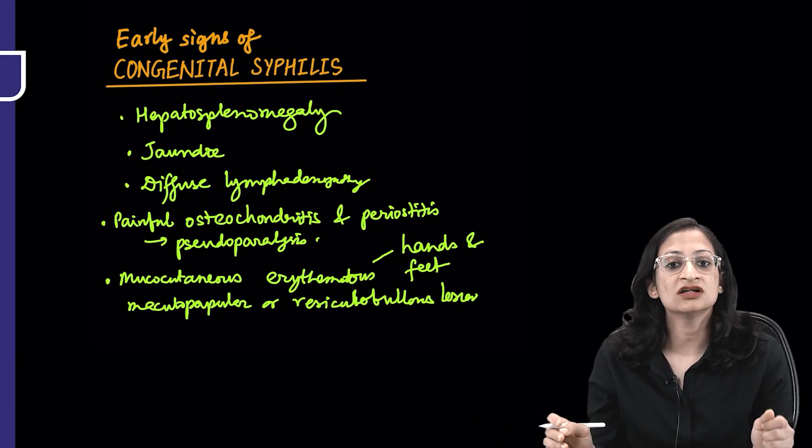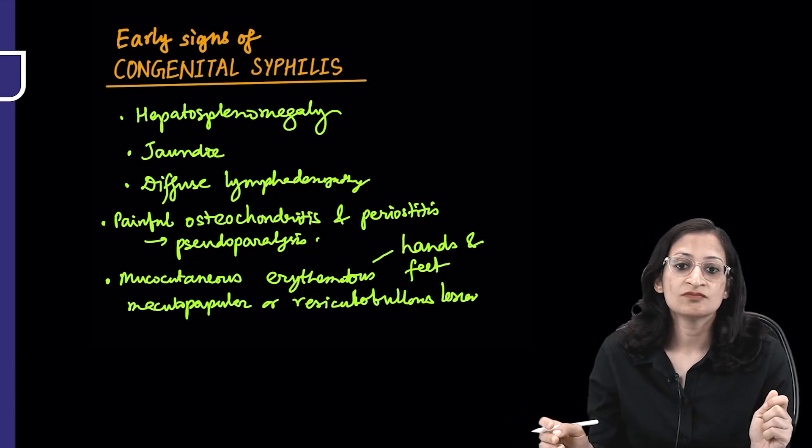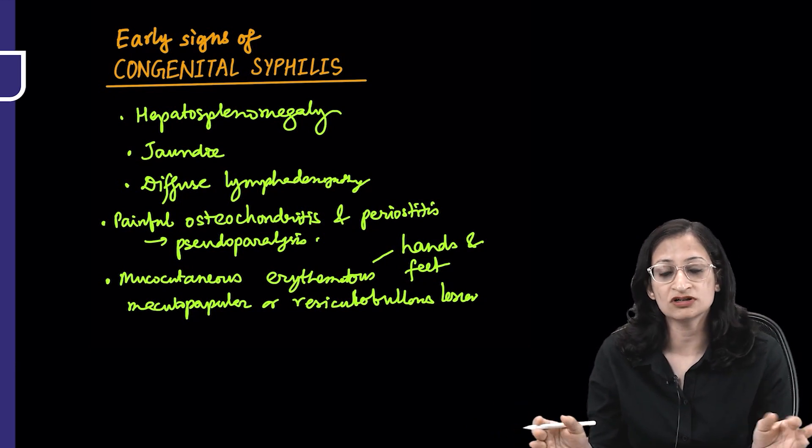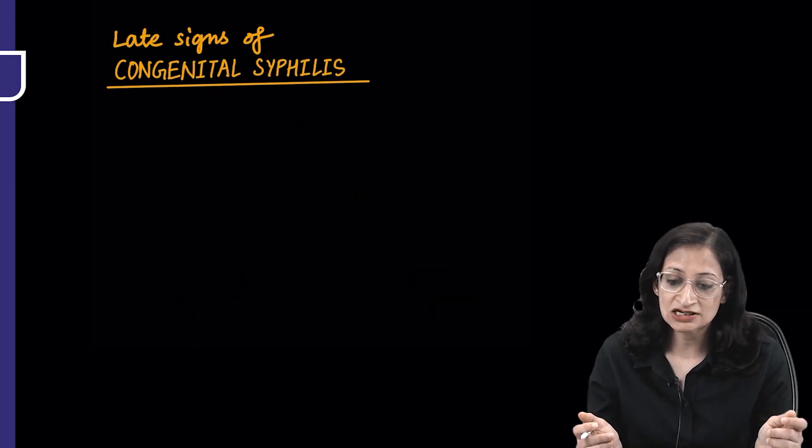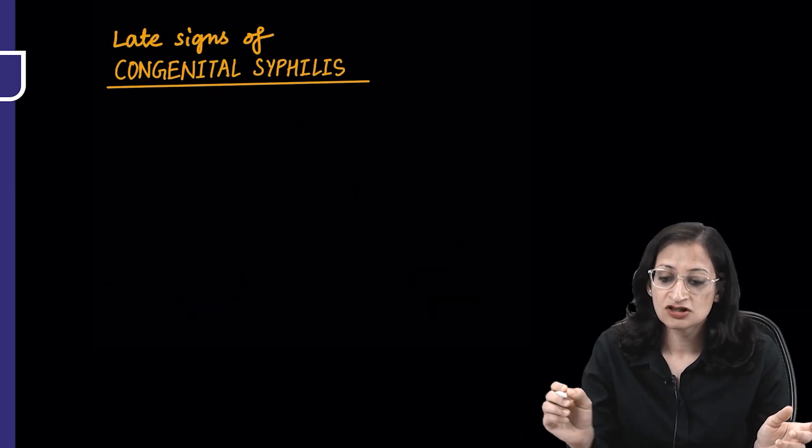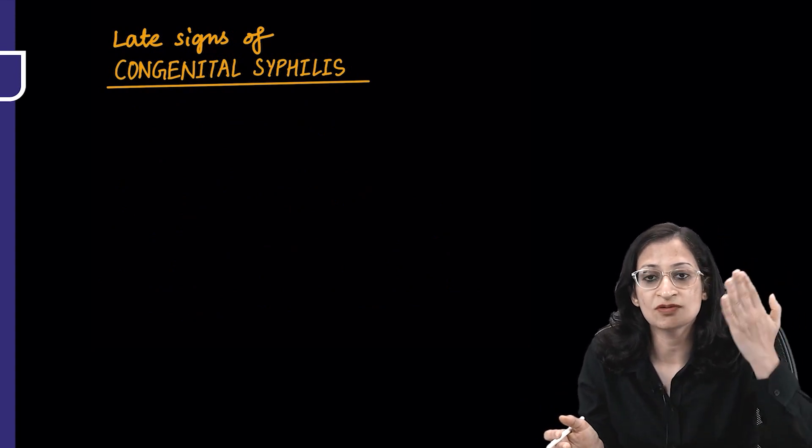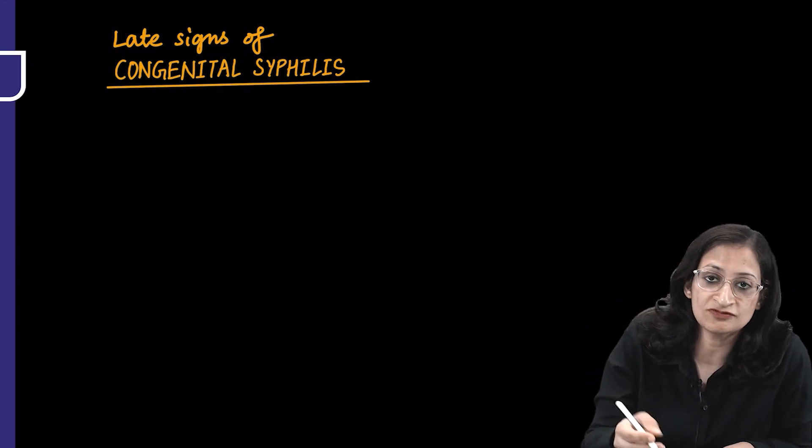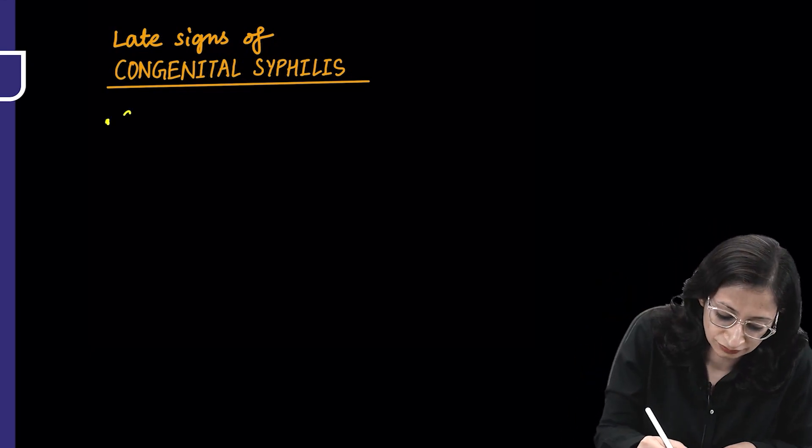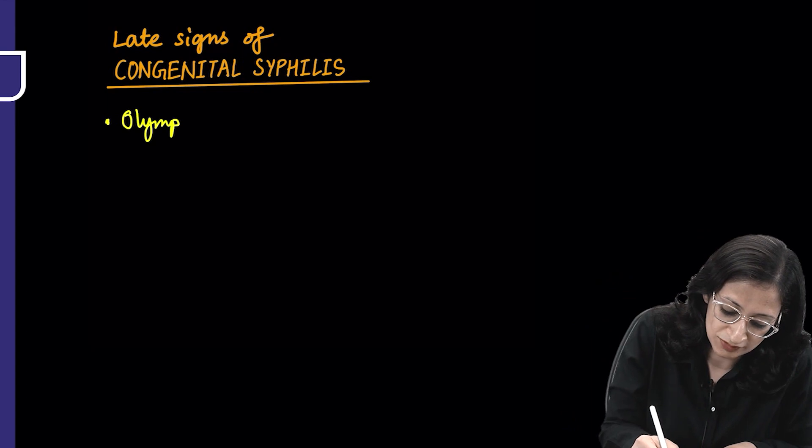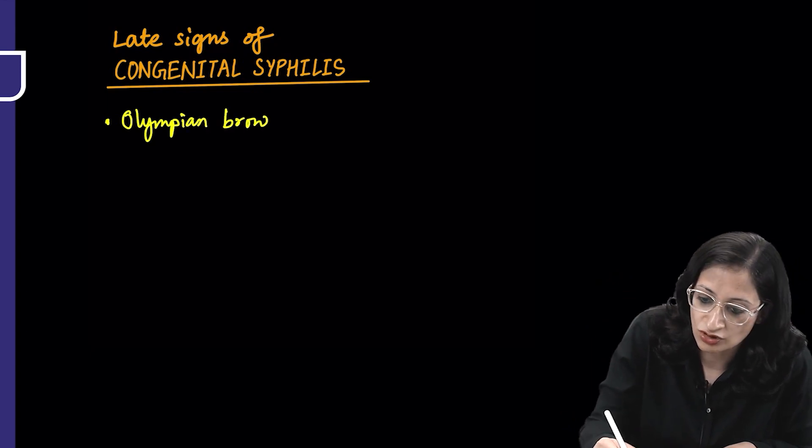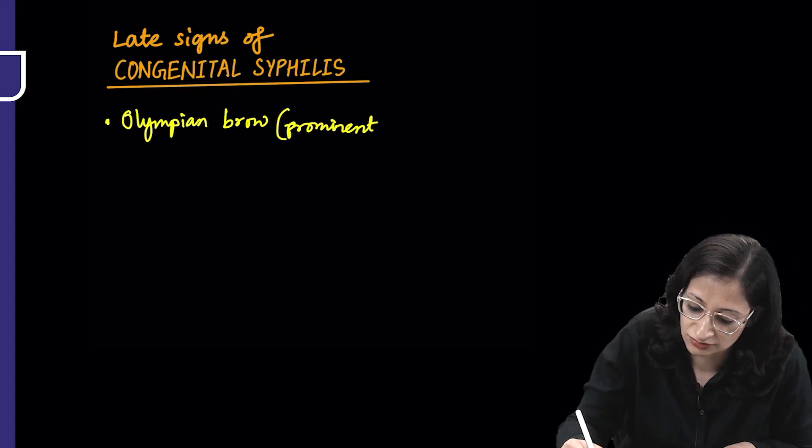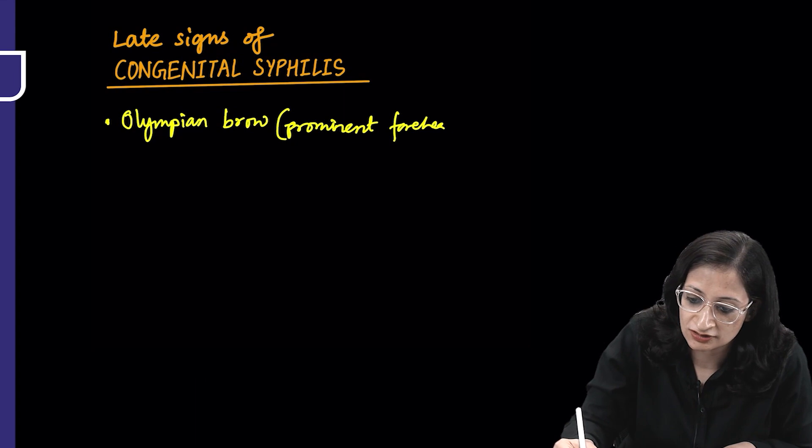All these are early signs of congenital syphilis, but more important are the late signs of congenital syphilis, very important and often asked. Let us try to remember it from head to toe. One is the Olympian brow or prominent forehead.